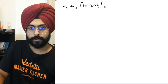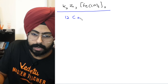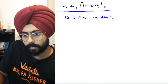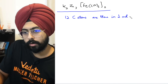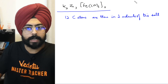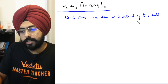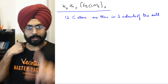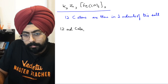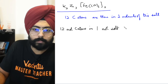K2Zn3[Fe(CN)6]2 — there are 12 carbon atoms in one molecule of this salt (6 × 2, because of the 'hold twice'). Don't forget the subscript 2. So there are 12 carbon atoms in one molecule of salt.